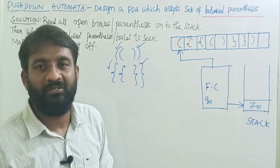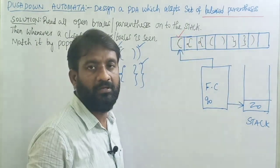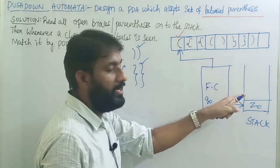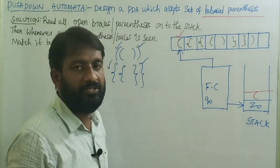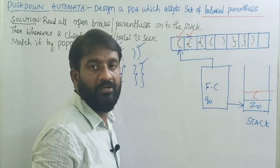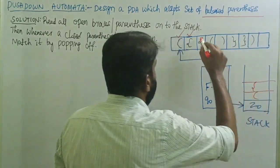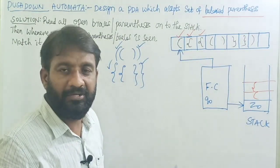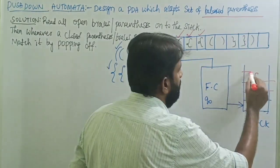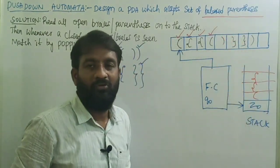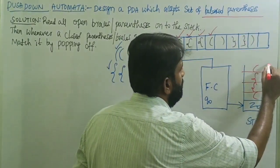Let me explain this logic using the example. First symbol is open brace — read it and push it onto the stack, remain on state q0. Then open parenthesis — read it and push onto the stack. Next, open parenthesis again — push onto the stack, remain on the same state. Then open brace — read it and push onto the stack; this is now the top of the stack.